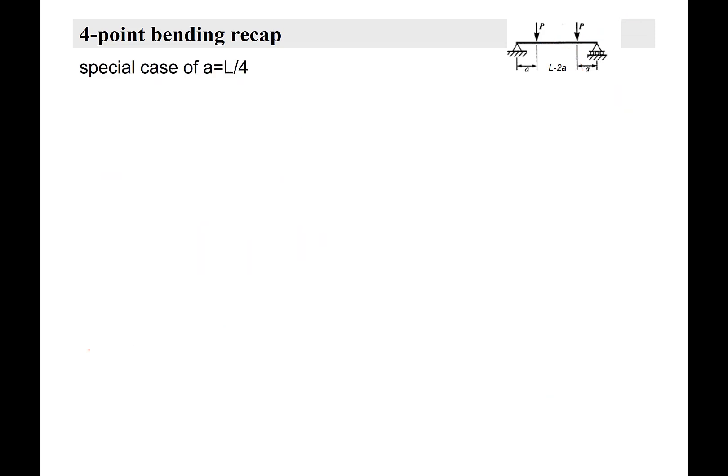So in the special case that A equals L over 4, in other words, the span ratio of L, this dimension, and S, this is between the loading anvils, L over S equals 2. Then, and then A, and you have two A's there, then your A is equal to L over 4, and we can plug that into those equations.